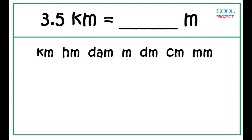Example, convert 3.5 kilometers to meters. Count the number of units from kilometer to meter: 1, 2, 3. Three units to the right.